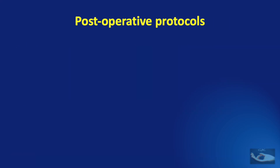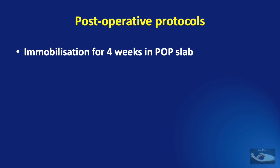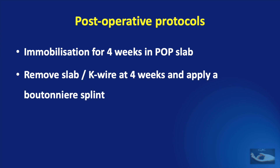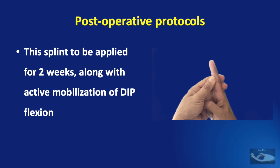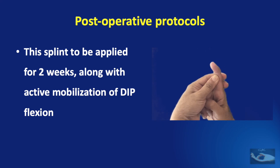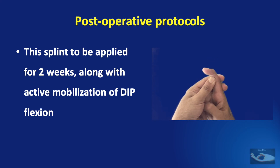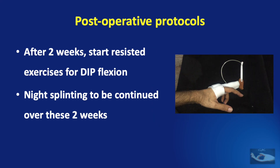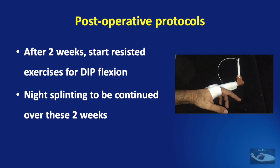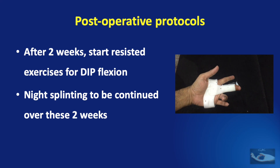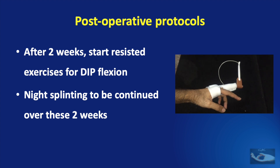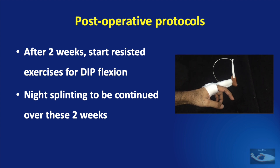Following the post-operative protocol is as important as the surgery. Immobilization is advised for the entire hand for 4 weeks in a volar POP slab, which can be removed at the end of 4 weeks and a boutonniere splint applied to the involved finger. This splint should be applied for 2 weeks along with active mobilization of DIP flexion, to prevent the oblique retinacular ligament from getting stuck again. At the end of 2 weeks, resisted exercises for DIP joint flexion can begin, and night splinting should be continued over these 2 weeks.